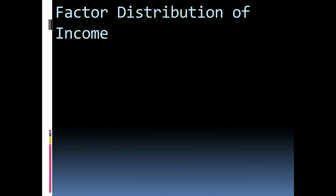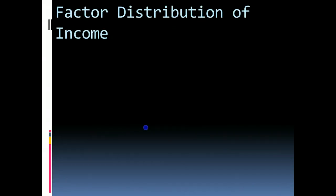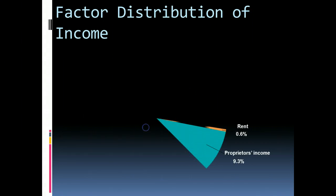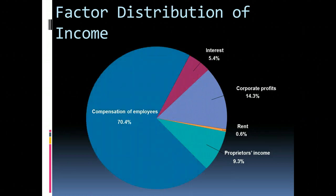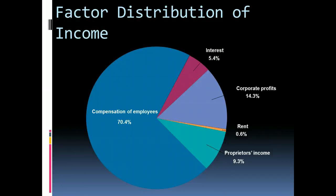Let's start by looking at an idea known as the factor distribution of income, which basically tells us that the share of total income distributed across various factors of production is based on that factor's productivity. Employees receive the vast majority of income in the form of wages, which would indicate that employees are the most productive of the factors.